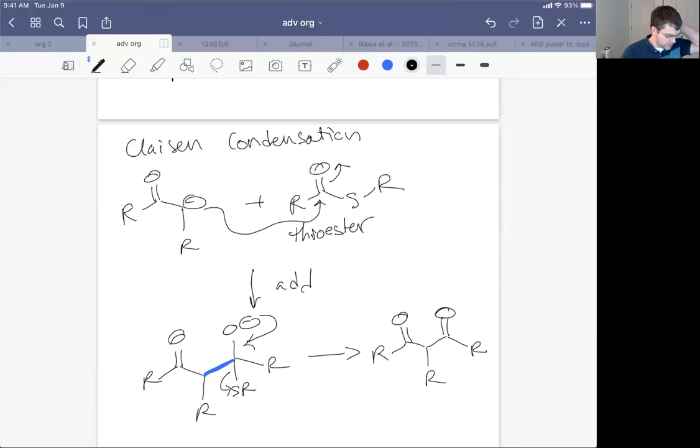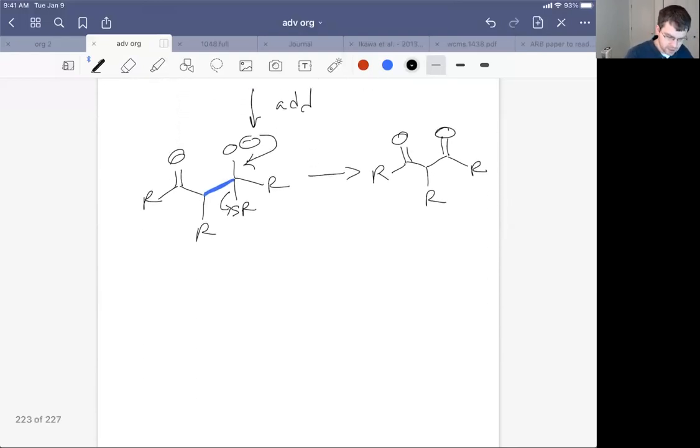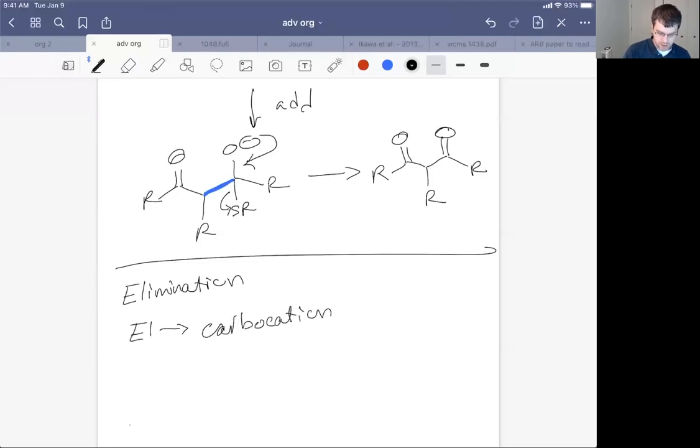So looking through, we see the book also describes several elimination reactions. Those elimination reactions are the same as what we saw previously. We have E1 reactions. I guess I'm just going to go over these at the organic two level. E1 has a carbocation.